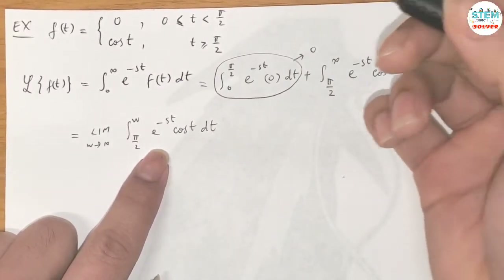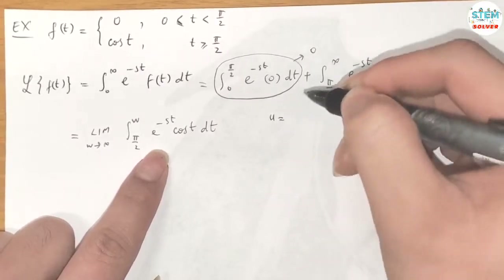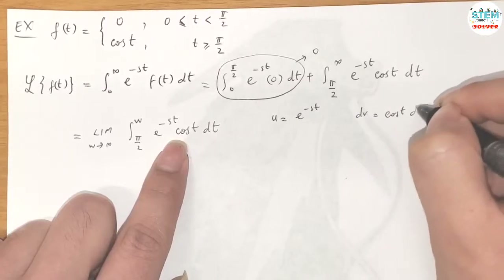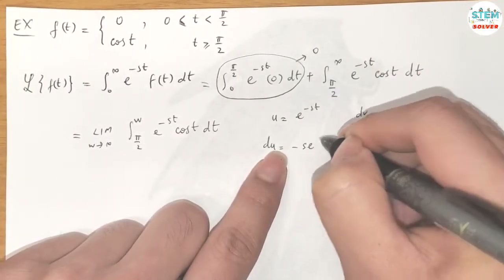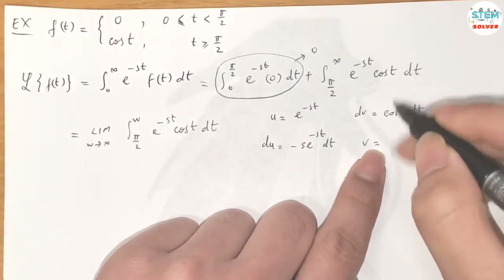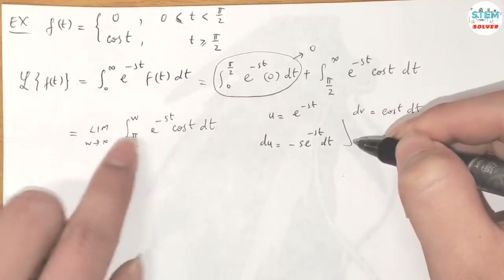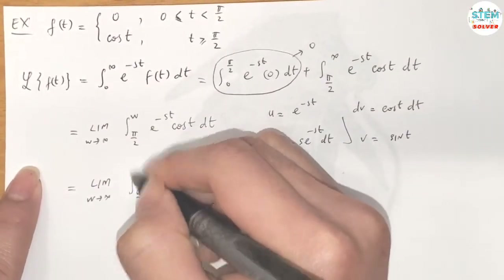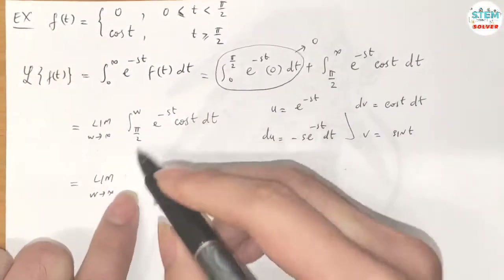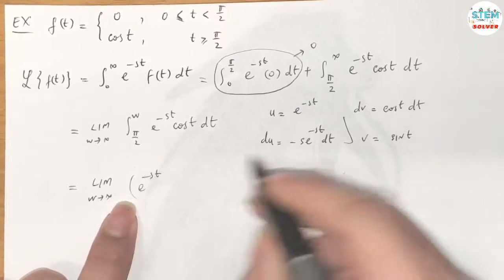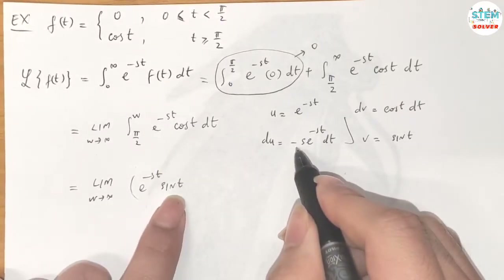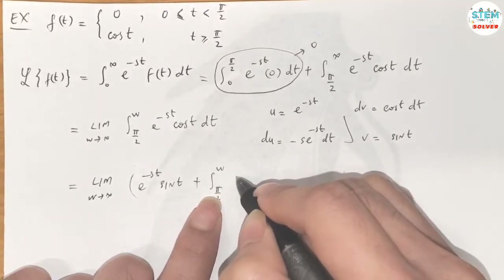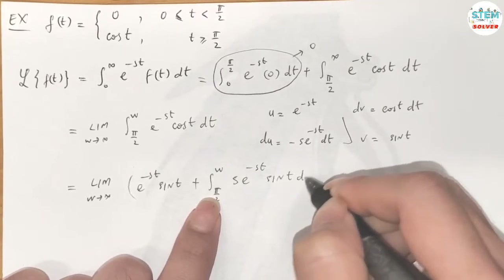To evaluate this, we use integration by parts. Let u = e^(-st) and dv = cos(t) dt. Then du = -s e^(-st) dt, and v = sin(t). So the integral becomes: e^(-st) sin(t) plus the integral from π/2 to w of s e^(-st) times sin(t) dt.